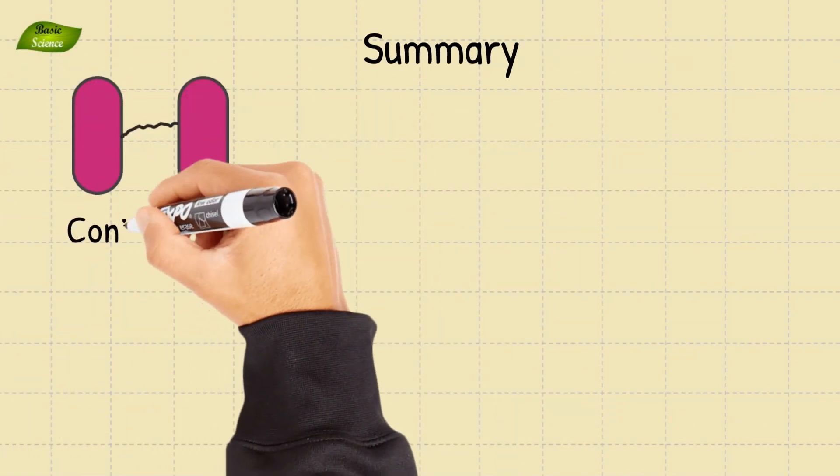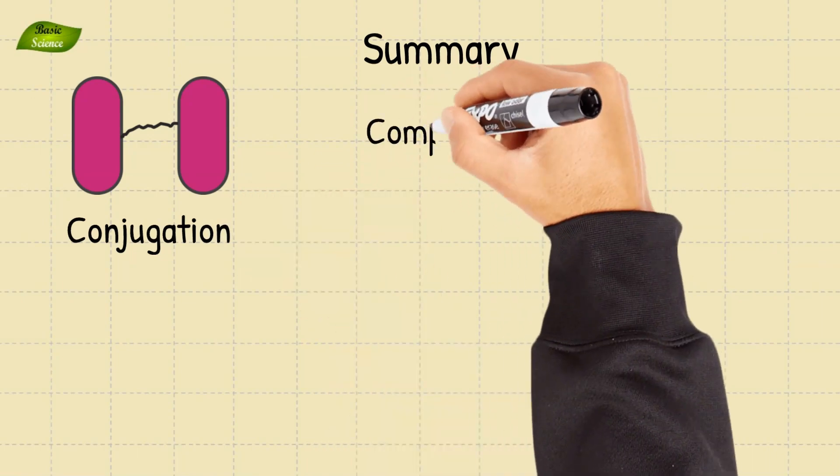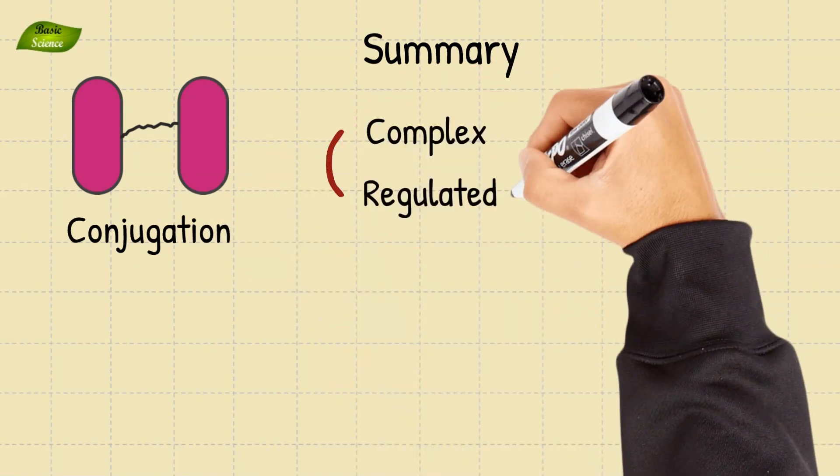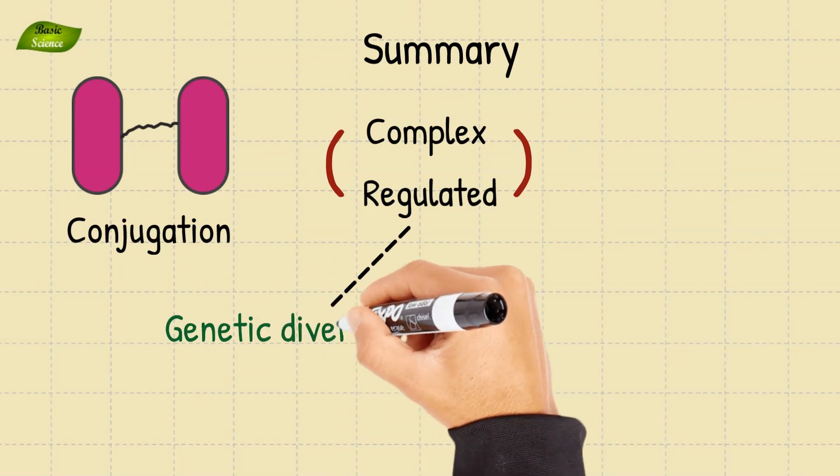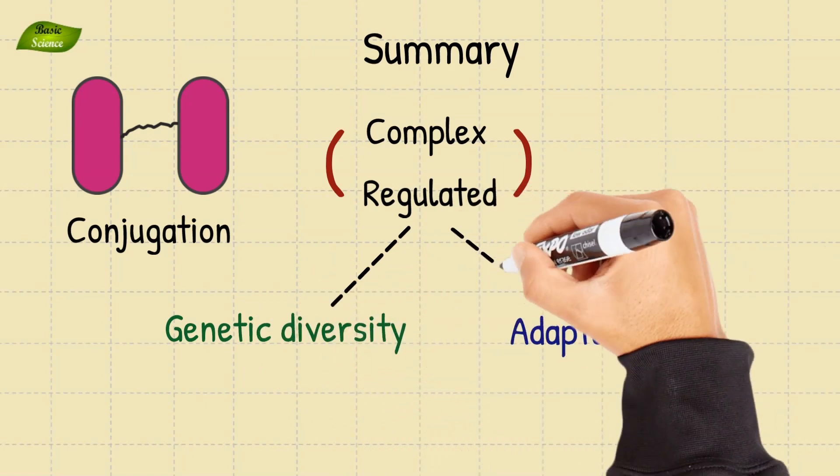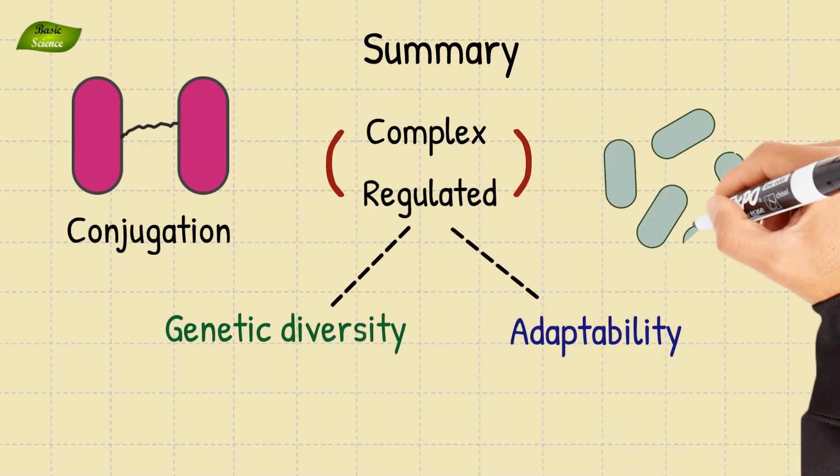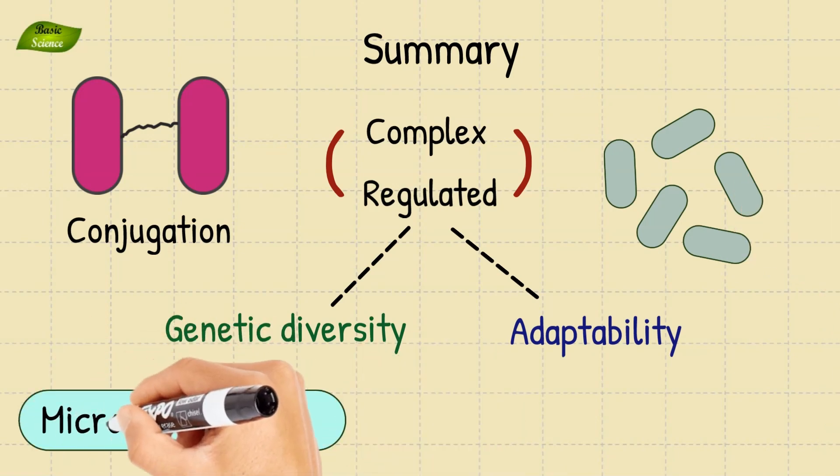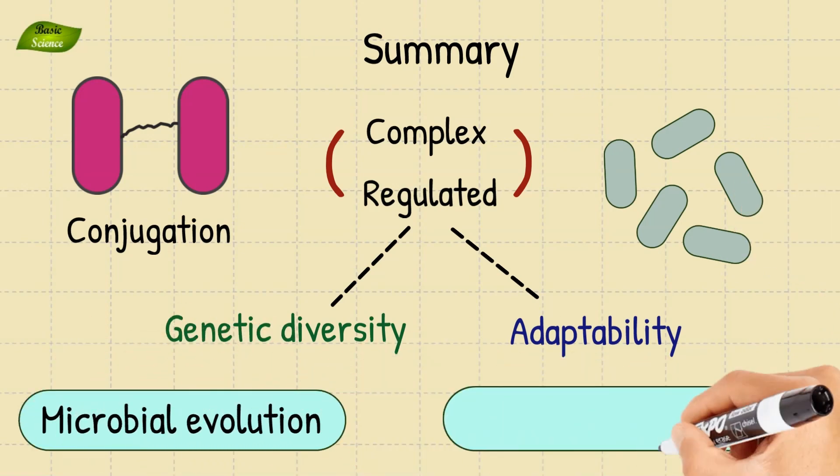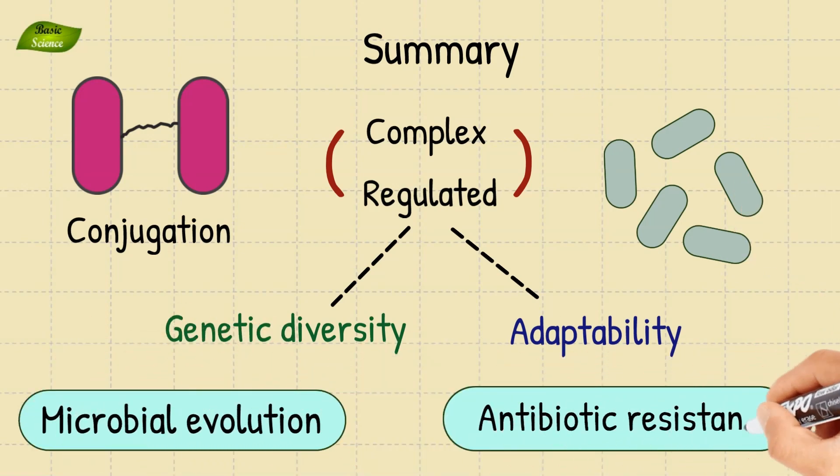In conclusion, bacterial conjugation is a complex and highly regulated process, essential for genetic diversity and adaptability of bacterial populations. Understanding this mechanism offers valuable insights into microbial evolution and the challenges in combating antibiotic resistance.